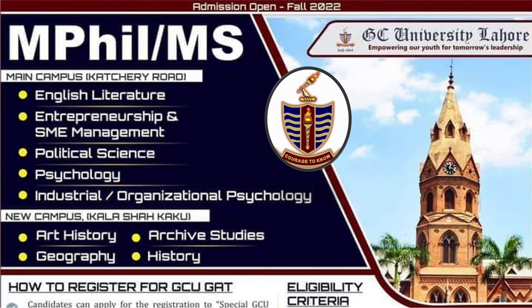The main campus is offering English Literature, Entrepreneurship, Political Science, Psychology, and Industrial-Organizational Psychology. On the Kalasha Kakoka campus, there is Art History, Archives Studies, Geography, and History. So the History department is also available there.